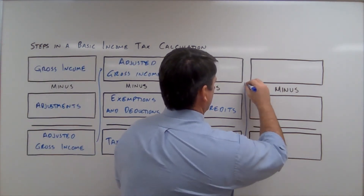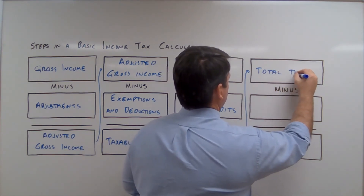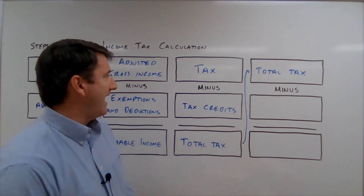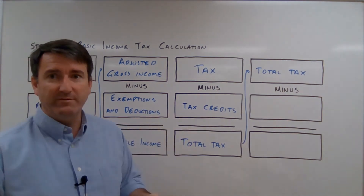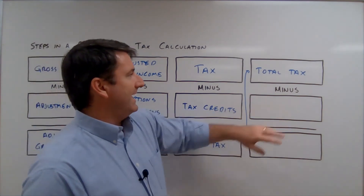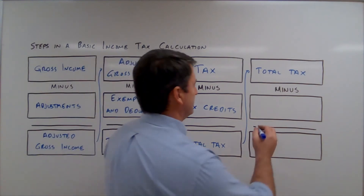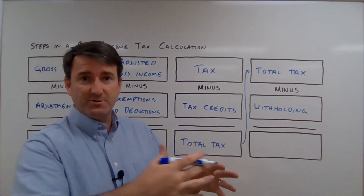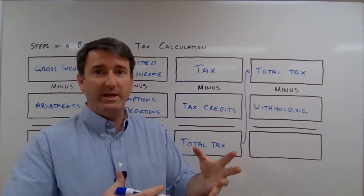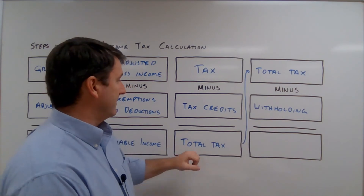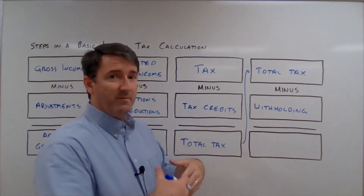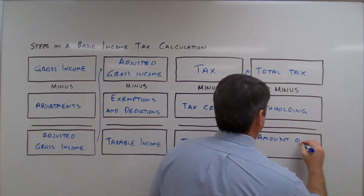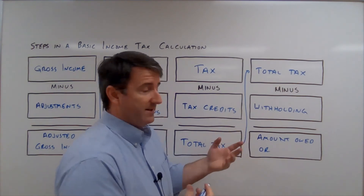The total tax is the amount of tax we owe for the year, after subtracting out our tax credits and after figuring out our taxable income. From that total tax, we subtract the withholding, because we've already paid taxes throughout the year. We take the total tax — the amount owed for the entire year based on our taxable income — subtract the withholding, and that gives us the amount we still owe, or if it's negative, our refund.